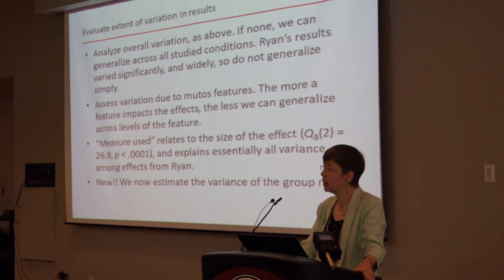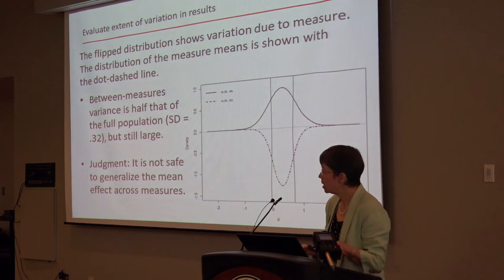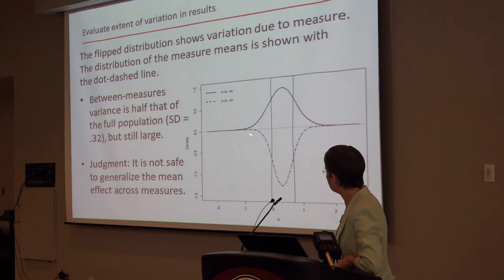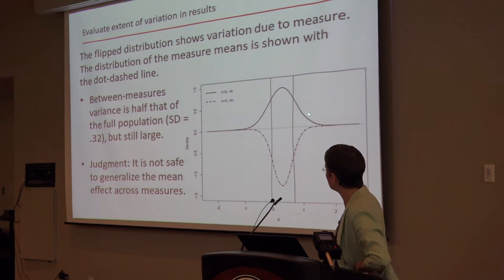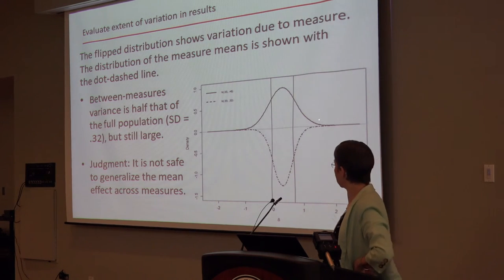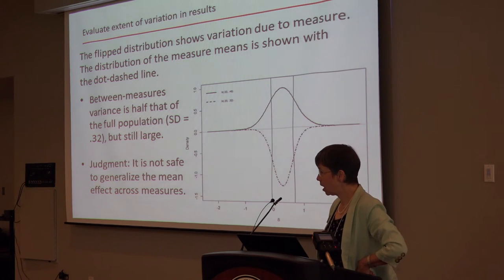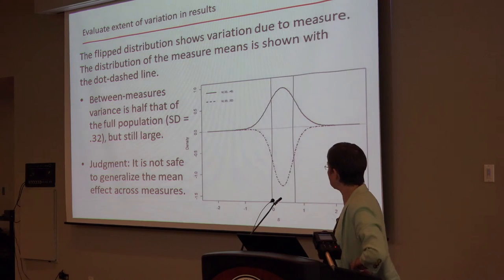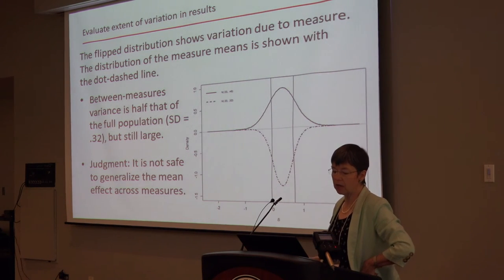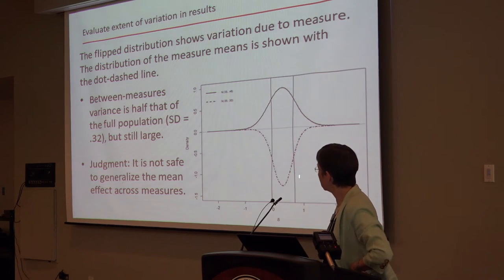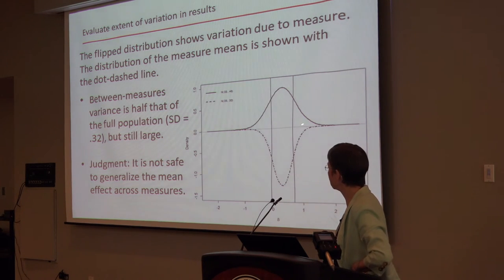This is a pretty standard technique — a chi-squared test — and it's a pretty big result: chi-squared of 26.8 with two degrees of freedom. It's whopping significant and explains basically all the variance statistically. But now we're going to estimate the variability in the group means. I've got a picture that puts two distributions, with one upside down, so we can put multiple distributions on here. The overall distribution of effects is shown, and then the distribution of the means — the standard deviation of that bottom distribution is 0.32, compared to 0.46 up here. So the variance is about half of the full population, but this is still a lot of variance.